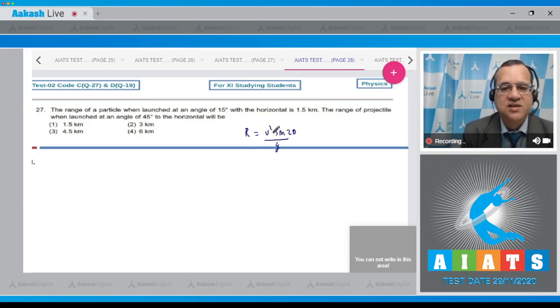In first case, angle is 15 degrees, so R which is equal to 1.5 kilometers equals u squared sine of 2 into 15 degrees divided by g. Whereas in the second case, the range would be equal to u squared sine of 2 into 45 divided by g.